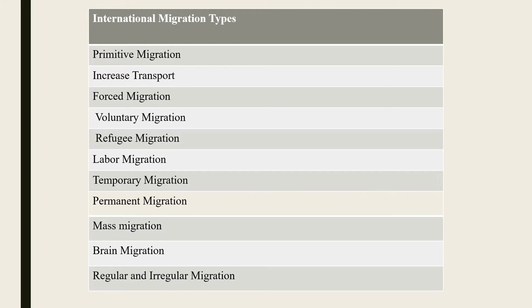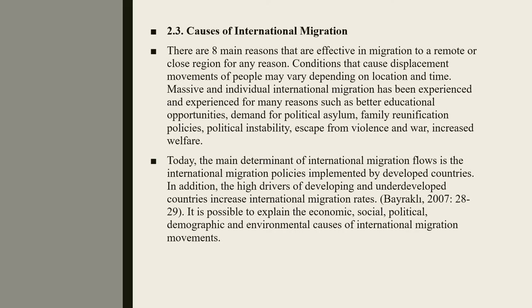International immigration types include: primitive migration, increased transport migration, forced migration, voluntary migration, refuge migration, labor migration, temporary migration, permanent migration, mass migration, brain migration, and regular and irregular migration.